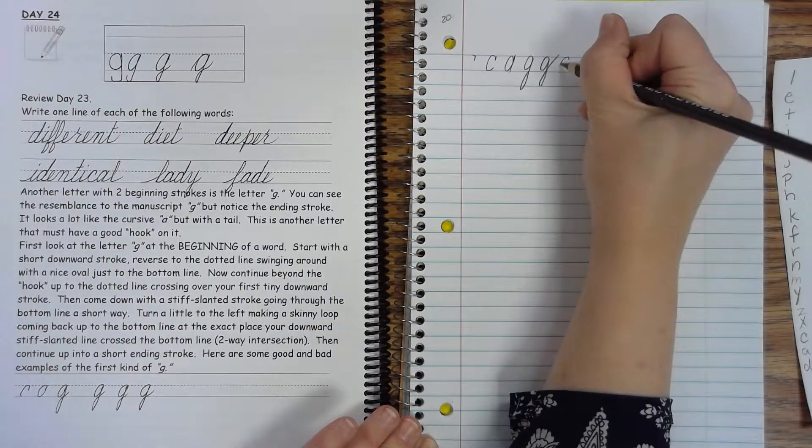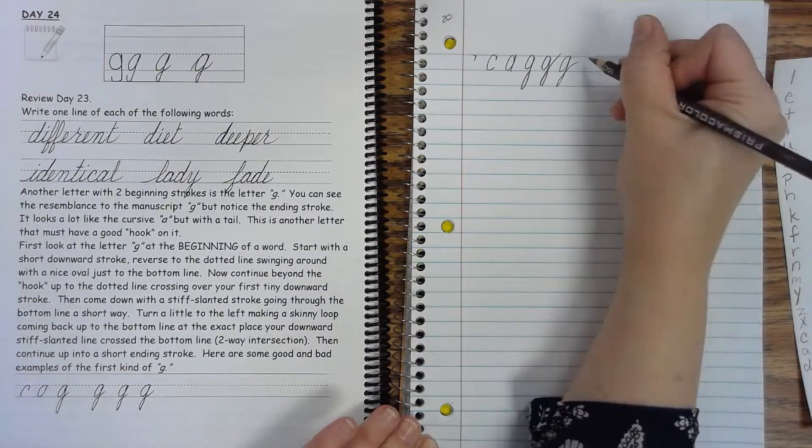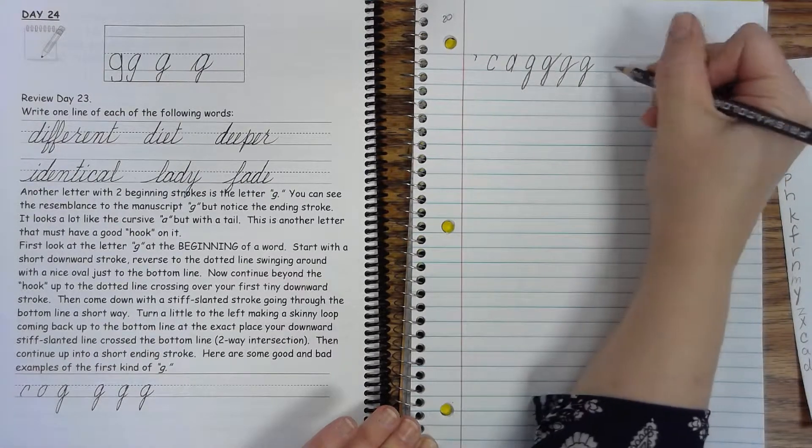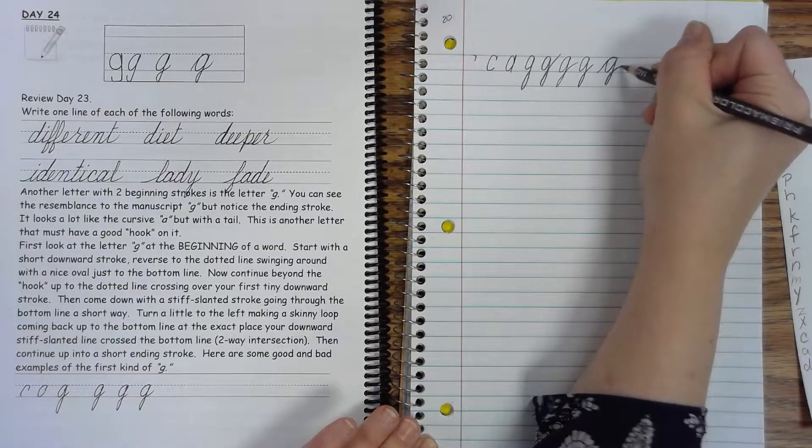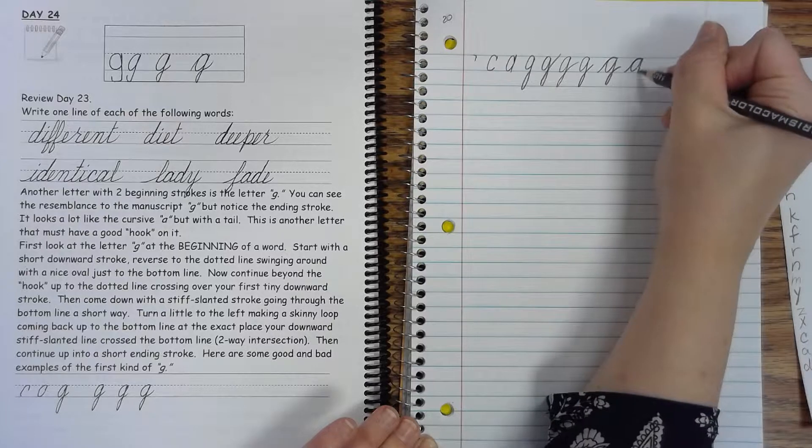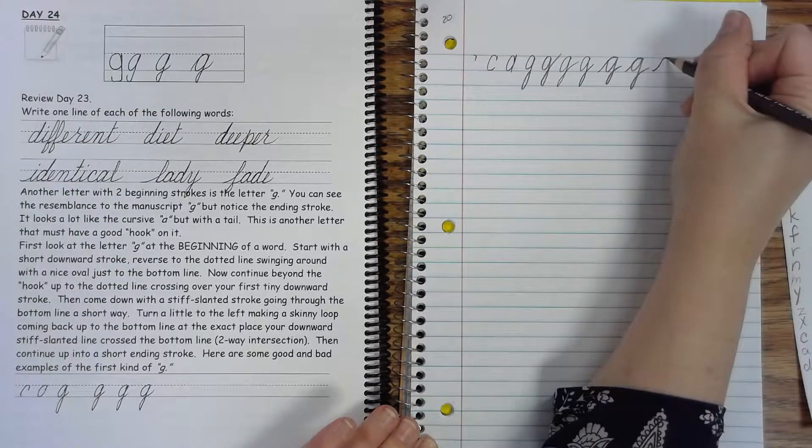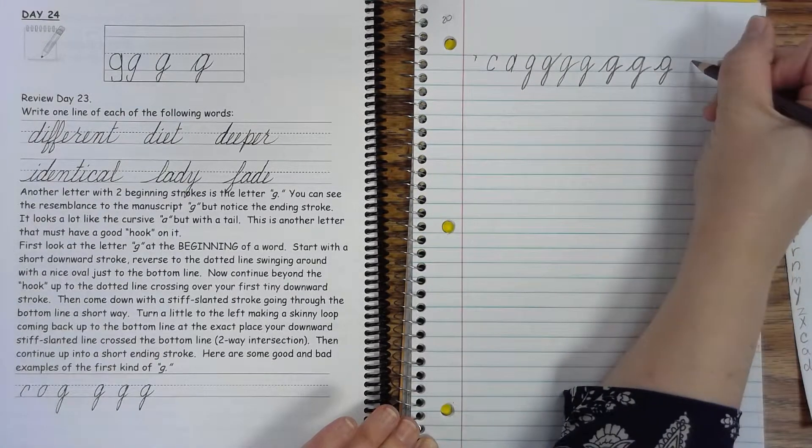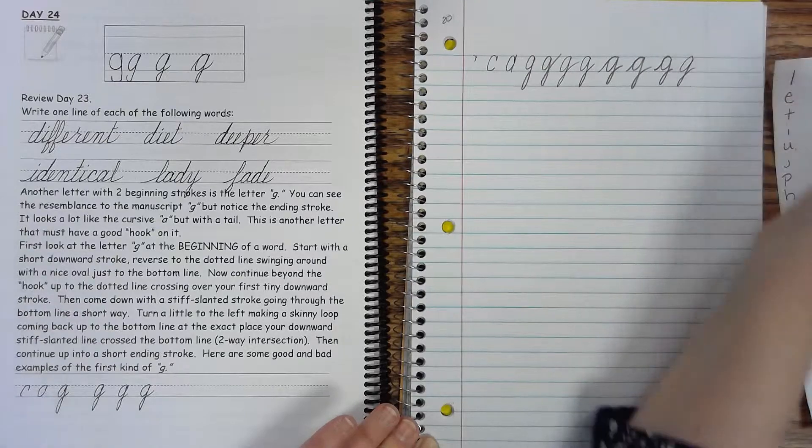Now don't do what Ms. Gamble did and go below that bottom line. You don't want to do that. Again, if you're connecting your G, it starts like that. So there's a G.